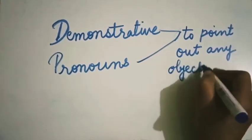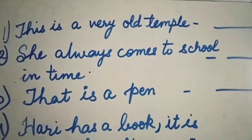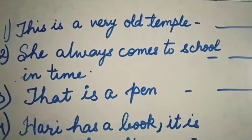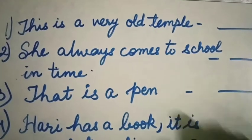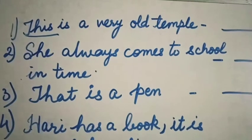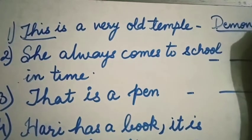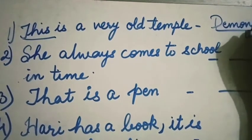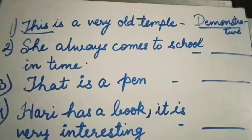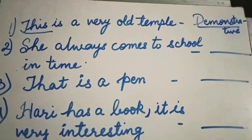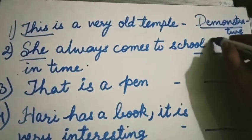Now let's look at some sentences and identify whether they are personal pronouns or demonstrative pronouns. First: 'This is a very old temple.' Here, 'this' is pointing out an object, so it is a demonstrative pronoun. Second: 'She always comes to school on time.' Here, 'she' refers to a person, so it is a personal pronoun.